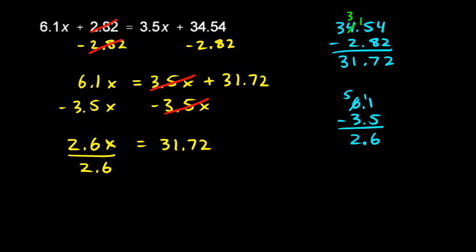To get x by itself, which means I need to get rid of the 2.6, which is multiplied to it, I have to divide by 2.6, and those will then cancel out. 2.6 up top, and down below, cancel out, leaving me with x all by itself on the left.